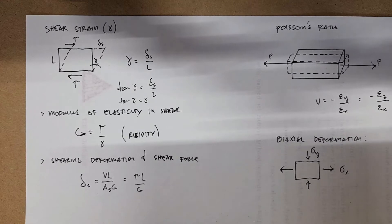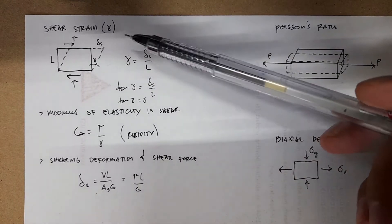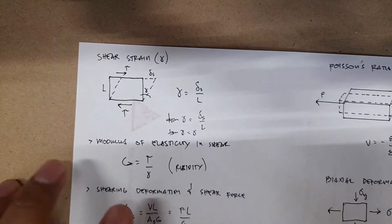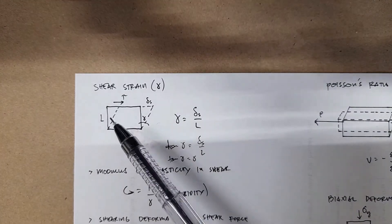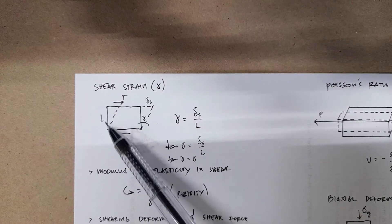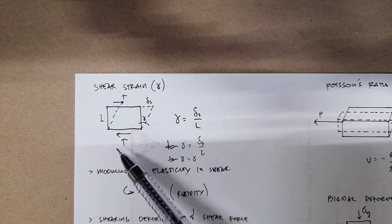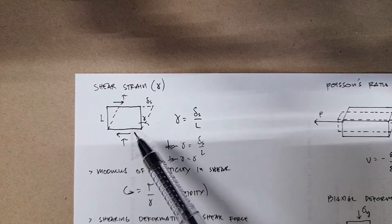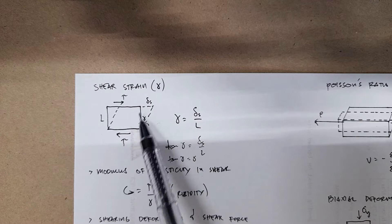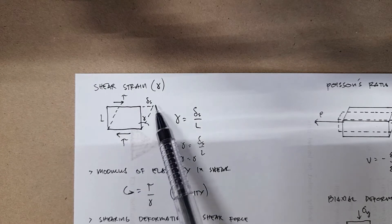So here we have shear strain, which is just the change in angle. For example, if you have this rectangular element having length L and subjected to shearing forces or shearing stress, it's expected to deform in this direction. So from the original shape of a rectangle, it will change to the dashed line.